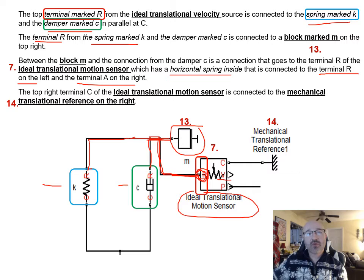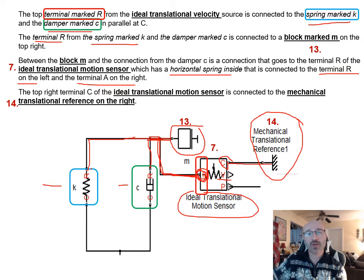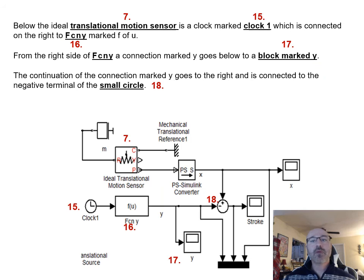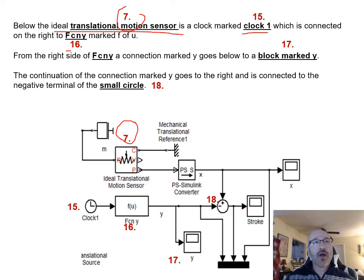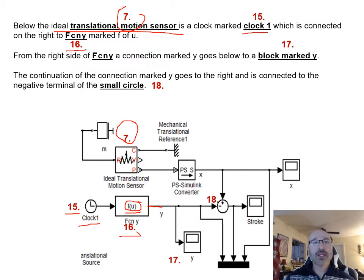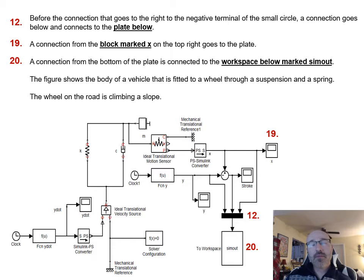Terminal C on top of the ideal translational motion sensor connects to a mechanical translational reference labeled element fourteen. Below element seven (the motion sensor), there is another clock labeled fifteen (clock one) connected to the function Y (f(u)), labeled element sixteen. On the right of function Y, a connection Y goes to the negative terminal of a small circle (element eighteen), and branches down to block Y labeled element seventeen.